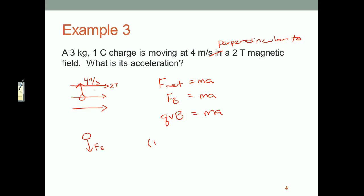The magnetic force is QVB. We are told it's a one coulomb charge. We're told that the speed is four meters per second. We're told that the field is two tesla. The mass is three kilograms. And we want to know the acceleration.